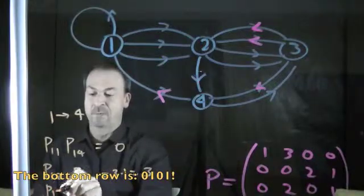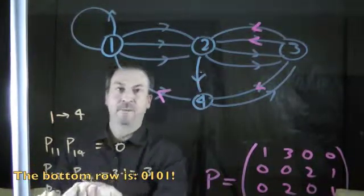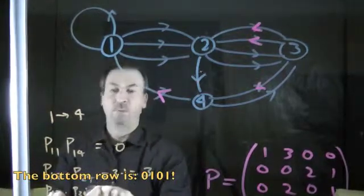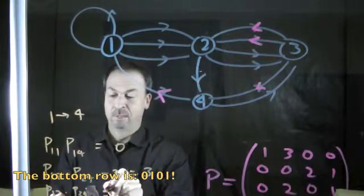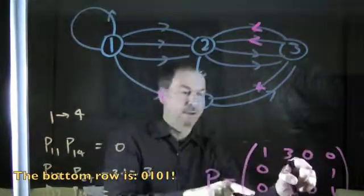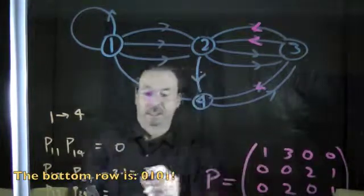Or I could have a layover at city 3. Get myself from 1 to 3. Get myself from 3 to 4 and multiply them together by multiplication principle. 1 to 3 is 1. 3 is this guy. And 3 to 4, 3 to 4 is this guy. 0 times 1 is 0.